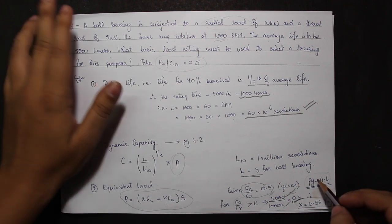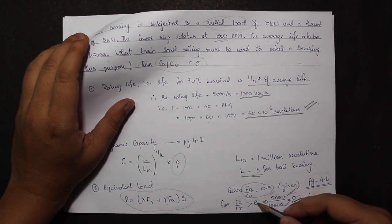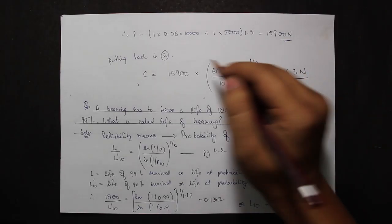Therefore, I will be selecting the value FA by FR is greater than E. So X is equal to 0.56 and Y is equal to 1.